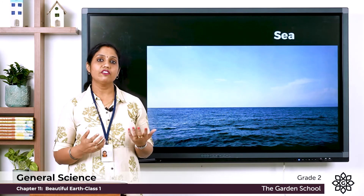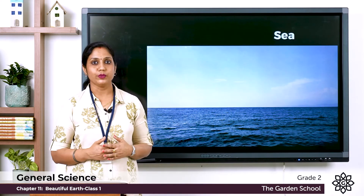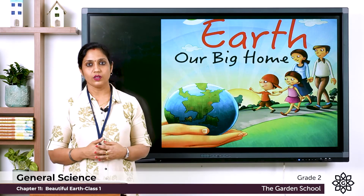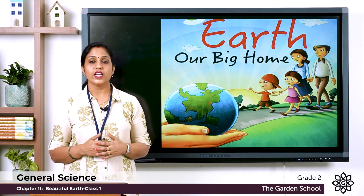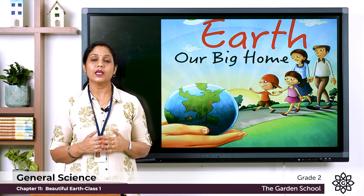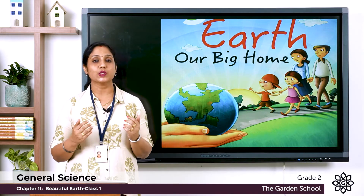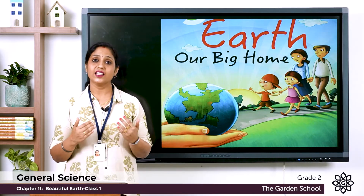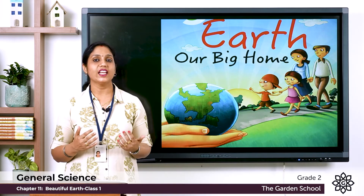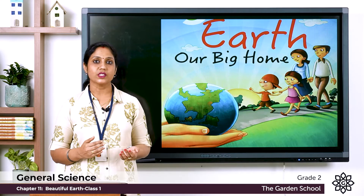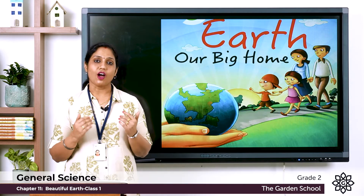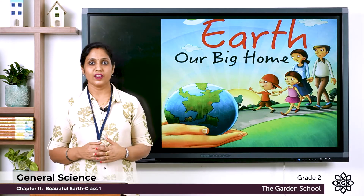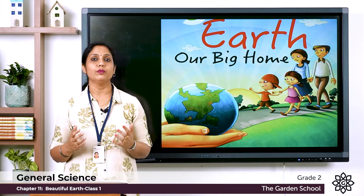These are the different landforms on the earth that make it beautiful. Earth is our home — not only for human beings, but also for plants and animals. We need clean air, water, and land, and in the same way, plants and animals also need clean air and water. We also need land to build homes and to grow crops, so it is our responsibility to keep our earth clean and tidy.